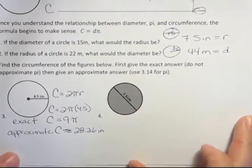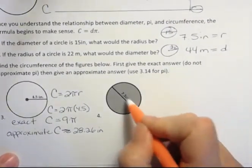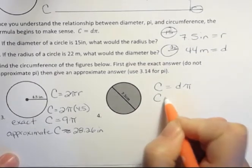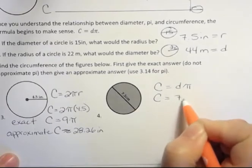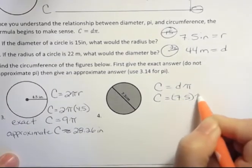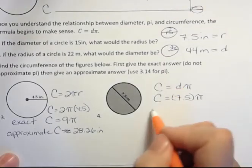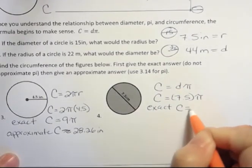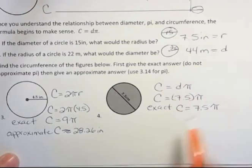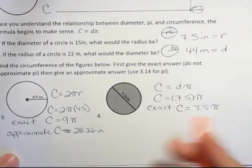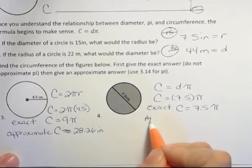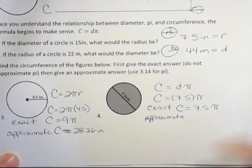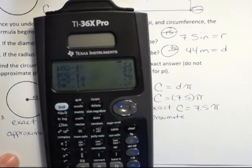Now on the other one, I get 7.5 centimeters, but I'm given the diameter. So I'm going to use diameter times pi. So the circumference is going to be 7.5π. Well, I don't have to put the parentheses in there. For the exact answer, I'm done, right? I just have circumference equals 7.5π. It's exact still because I haven't approximated pi.